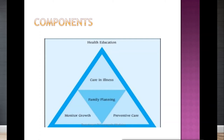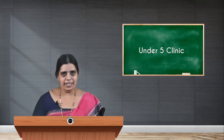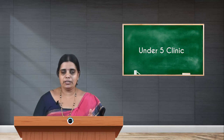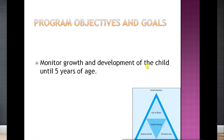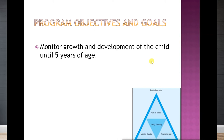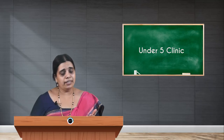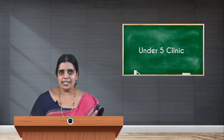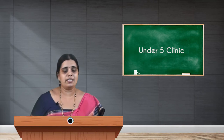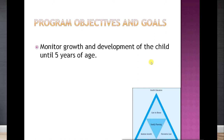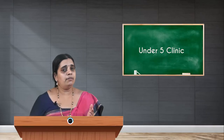There are two main objectives and goals for this program. The first is to monitor the growth and development of the child until five years of age. Up to one year, you monitor weight, height or crown-heel length, and head circumference at least monthly to detect malnutrition or developmental delay. After one year, up to five years, check height, weight, mid-arm circumference, chest circumference, and head circumference at least once every three to four months.